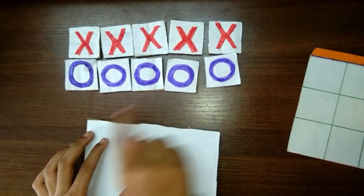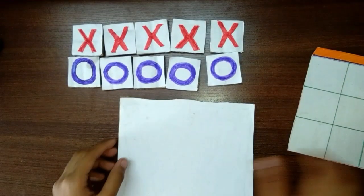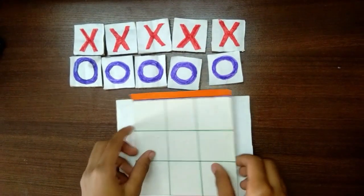Make 5 X's and 5 O's. If you need, you can take a thick cardboard and paste this grid on it.